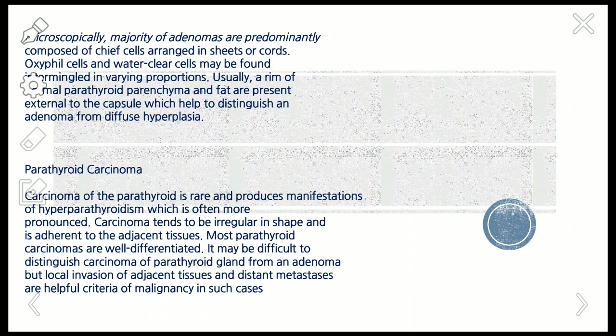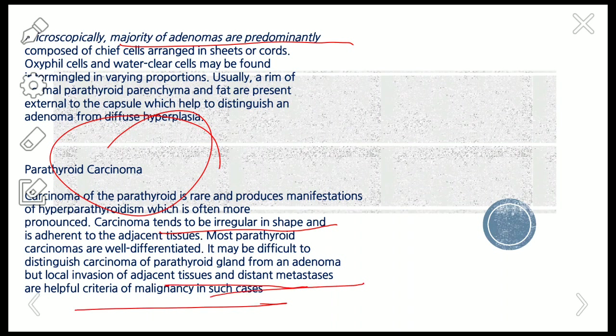The major clinical manifestations seen are groans, stones, moans, and bones. Majority of adenomas are composed microscopically of chief cells arranged in sheets or cords. Oxyphil cells and water-clear cells may be found intermingled in varying proportions. Parathyroid carcinoma is less common and tends to be irregular in shape, showing local invasion to adjacent tissue; distant metastasis is a helpful criterion for malignancy.